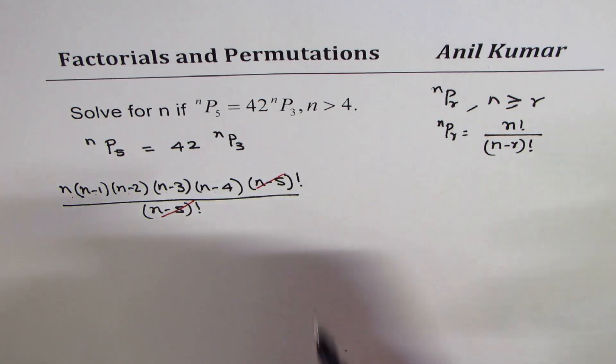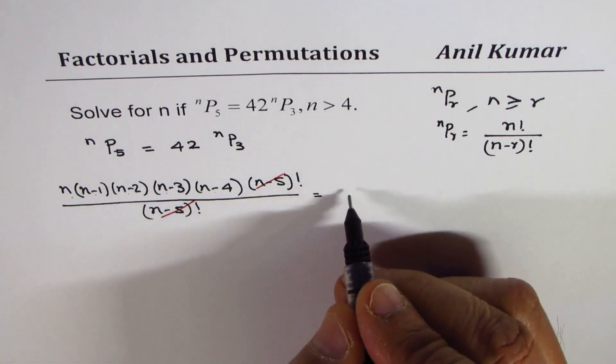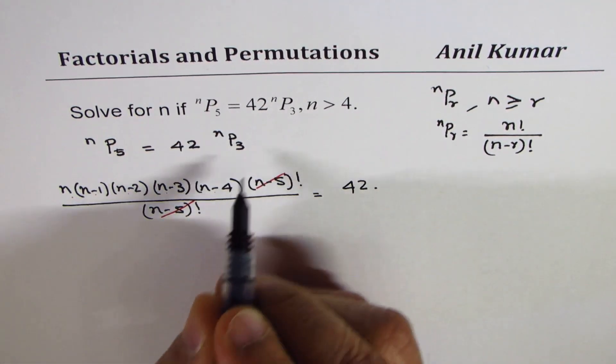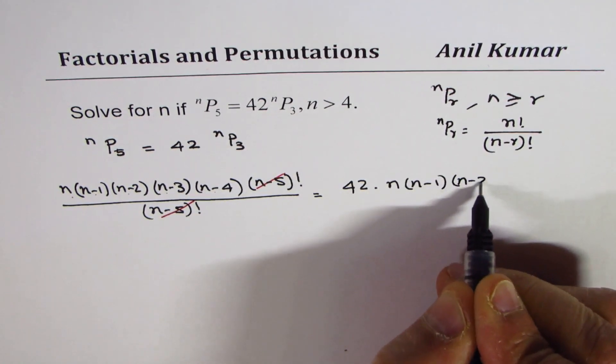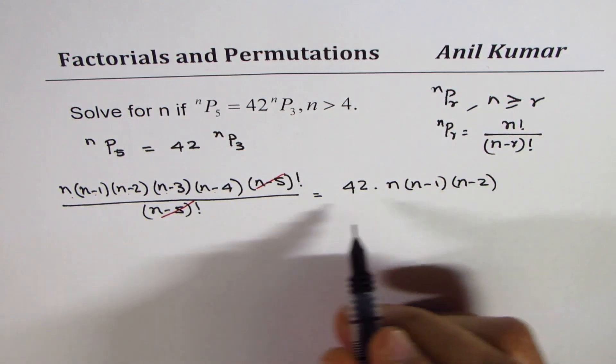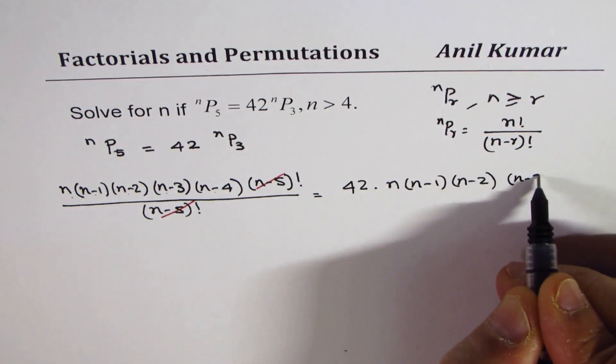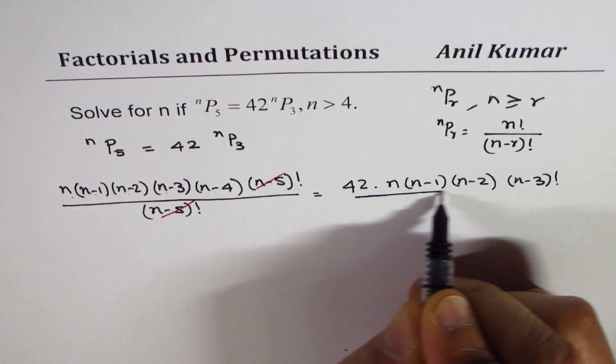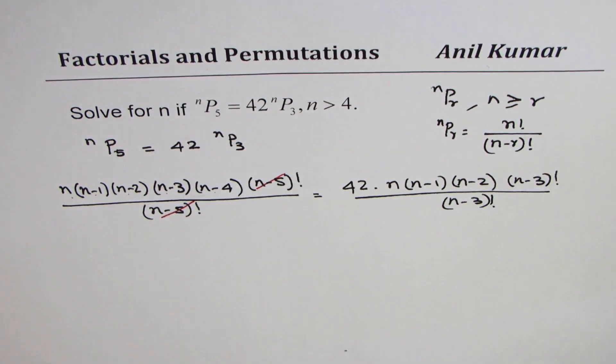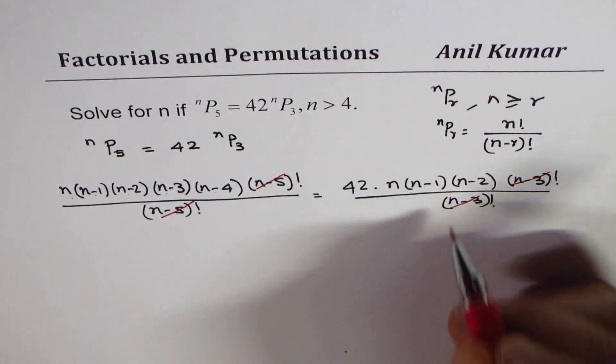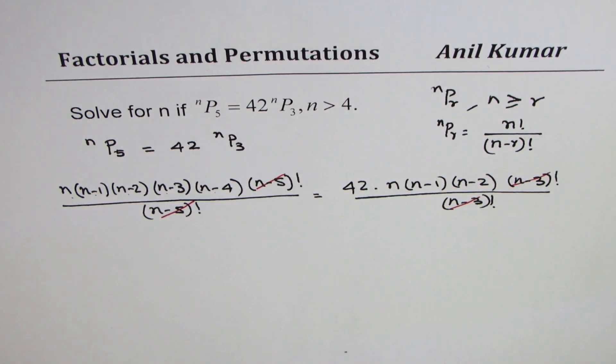So on the right side, I will not write in this fashion. I will say 42 times - we want 3 terms. n times (n-1) times (n-2), since we know that (n-3) factorial will cancel out. Slowly we will get used to this.